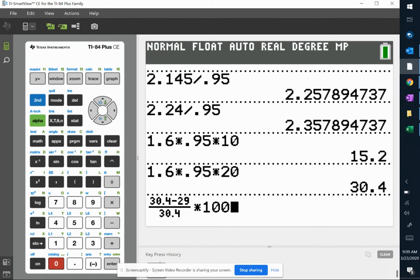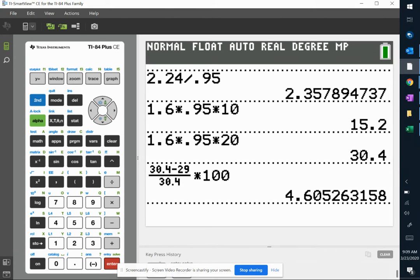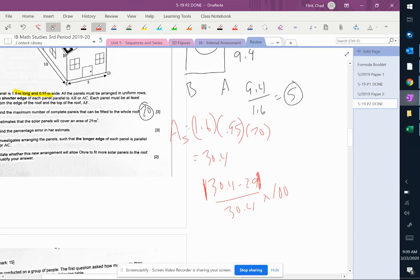Times 100, and that formula is on your formula sheet also, so 4.61%.